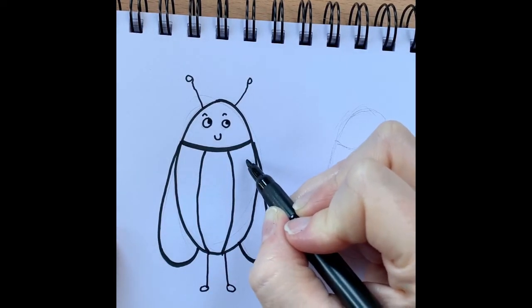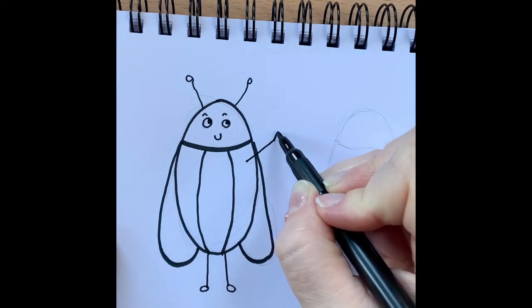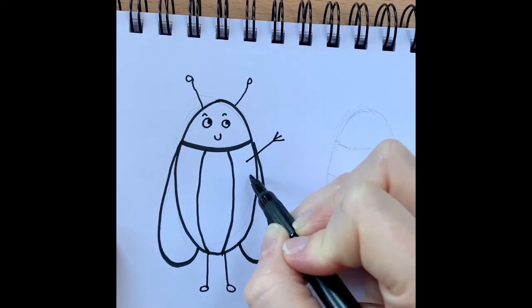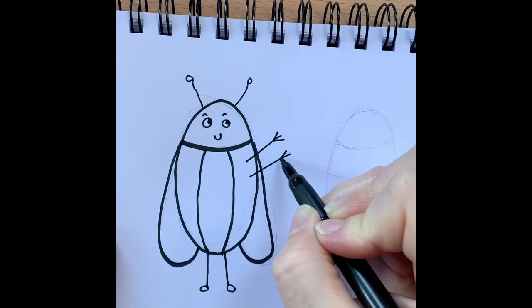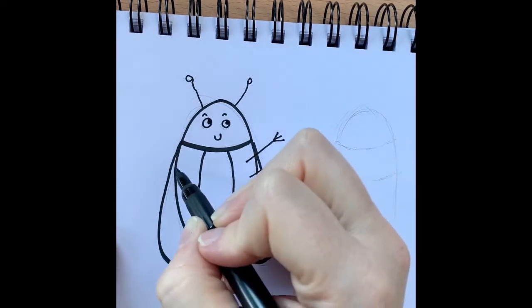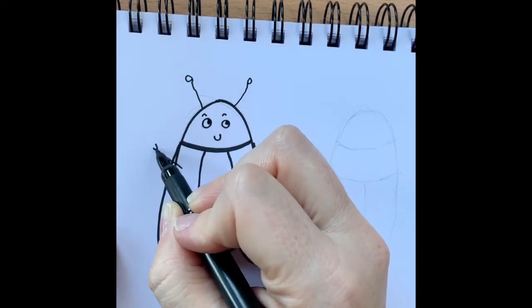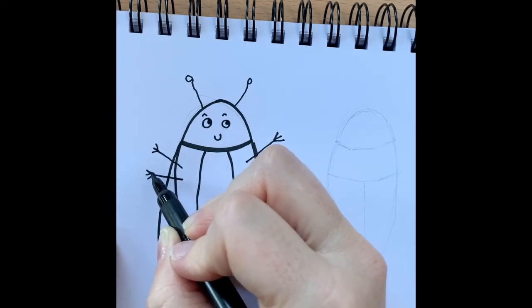And some arms. So we're going to do a line, one, two, three sticks. A line, one, two, three sticks. Same on the other side. Line, one, two, three. Line, one, two, three.